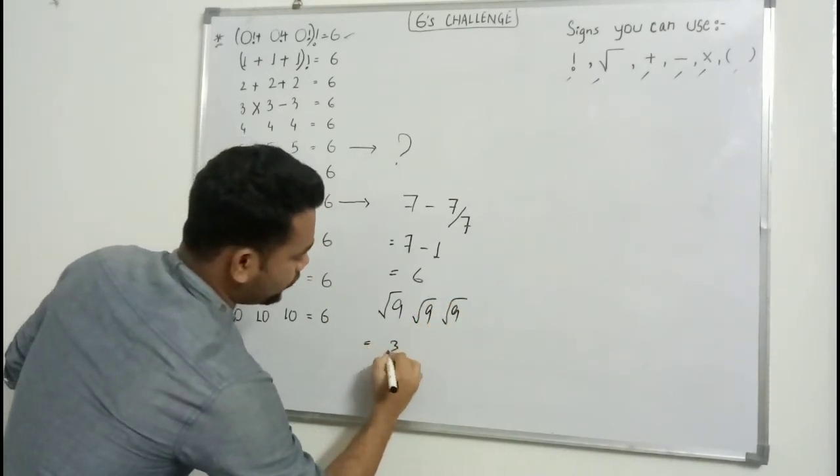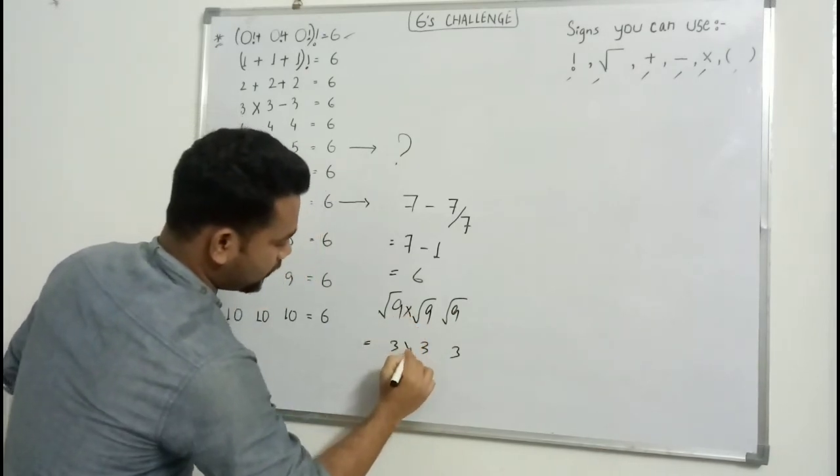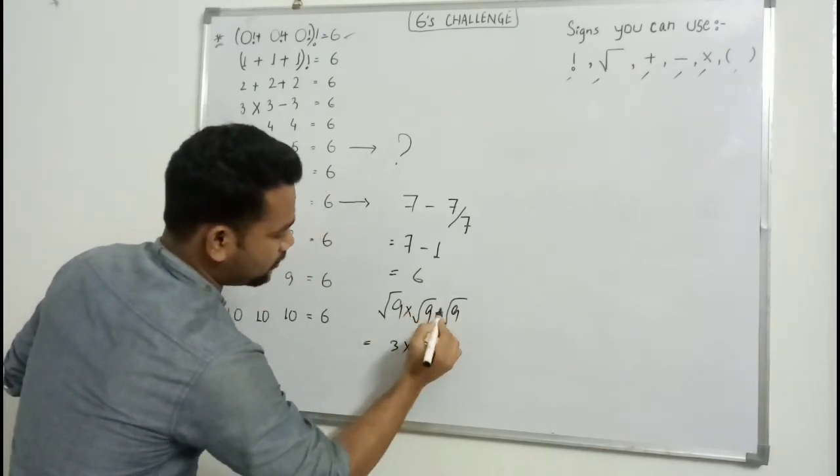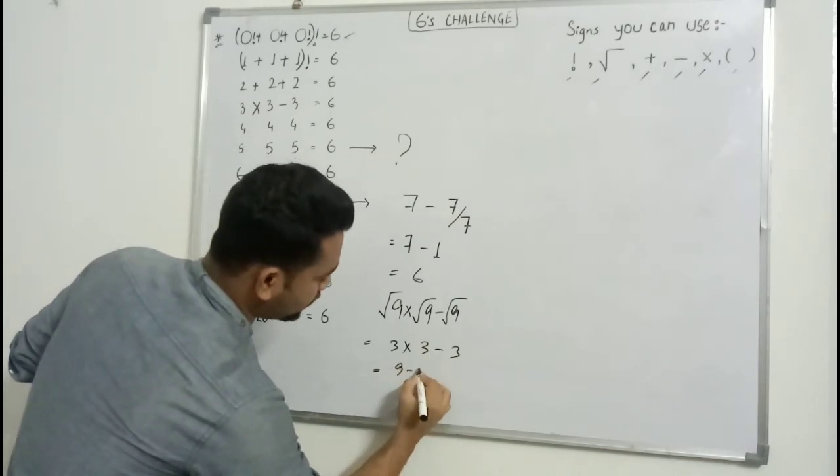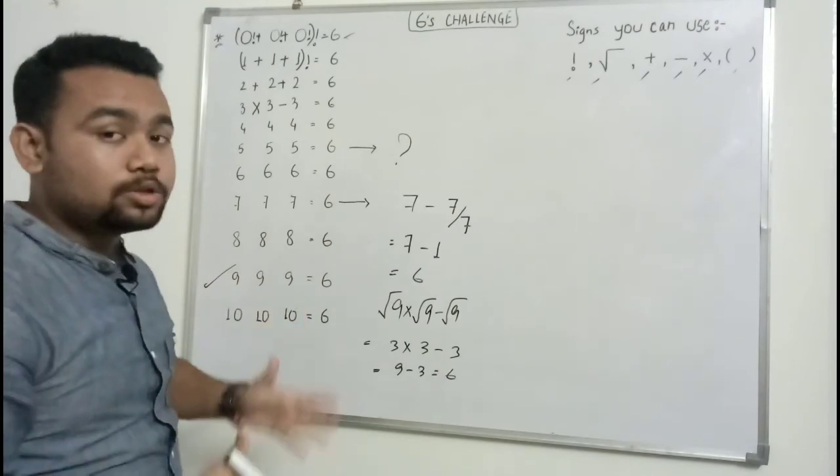If I put multiplication here, it becomes nine. Nine minus three gives us six. So this is how you need to proceed on.